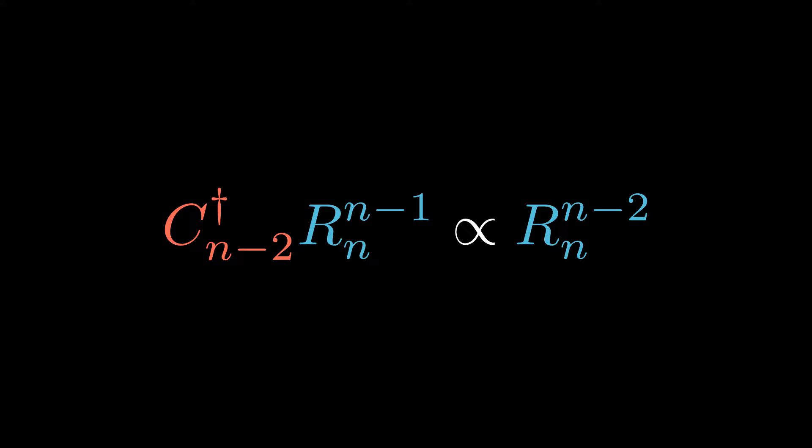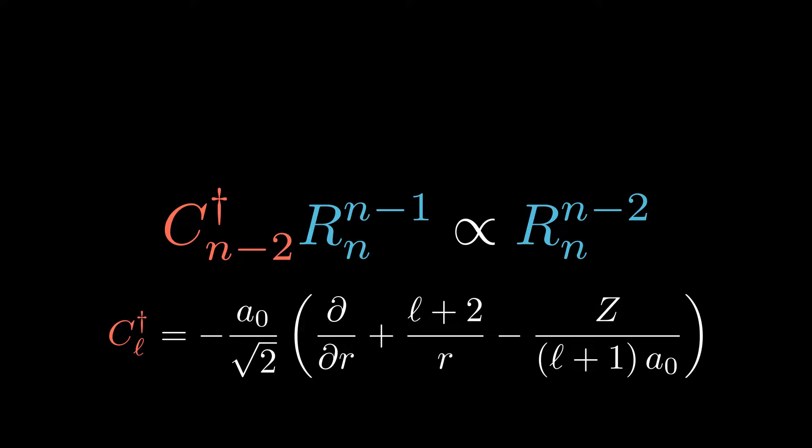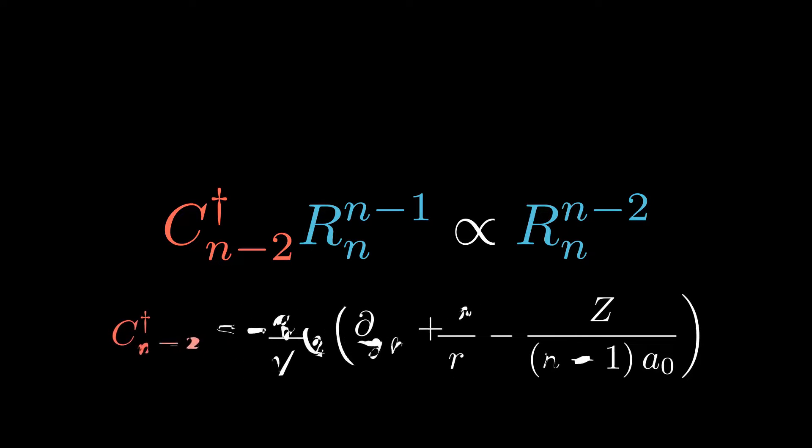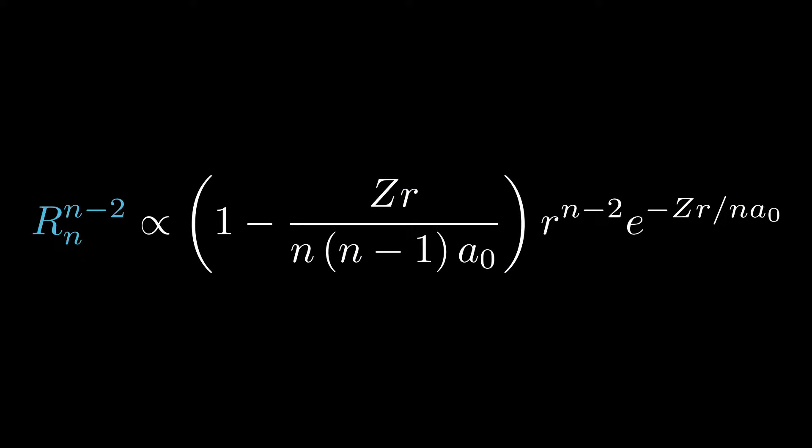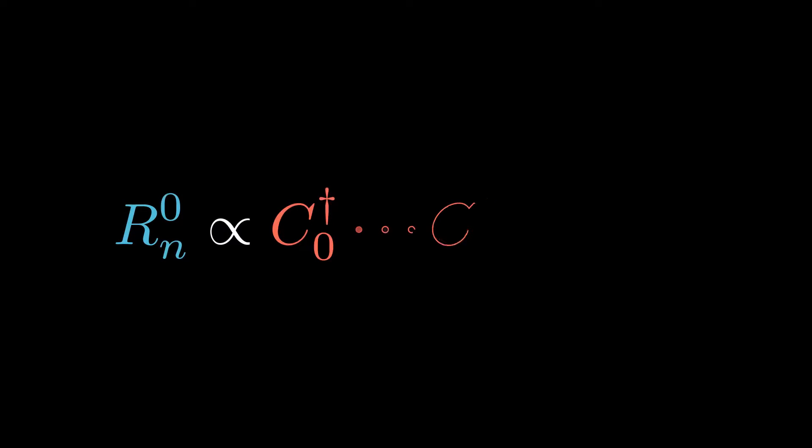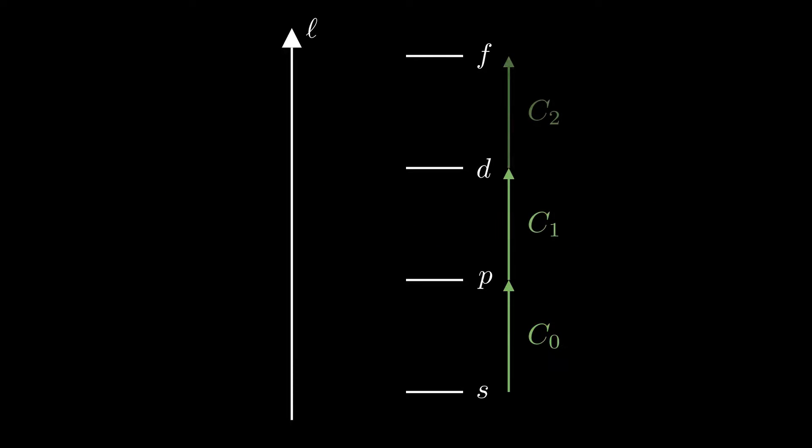We begin by working out the C_r^† in position representation, which is simply obtained by substituting radial momentum in position representation. We then use this operator on l equals to n-1 eigenfunctions to obtain the l equals to n-2 eigenfunctions. This procedure can be generalized to obtain states with less and less orbital angular momentum, by resetting l to the target state until l equals to 0, which are the s orbitals for different principal quantum number.